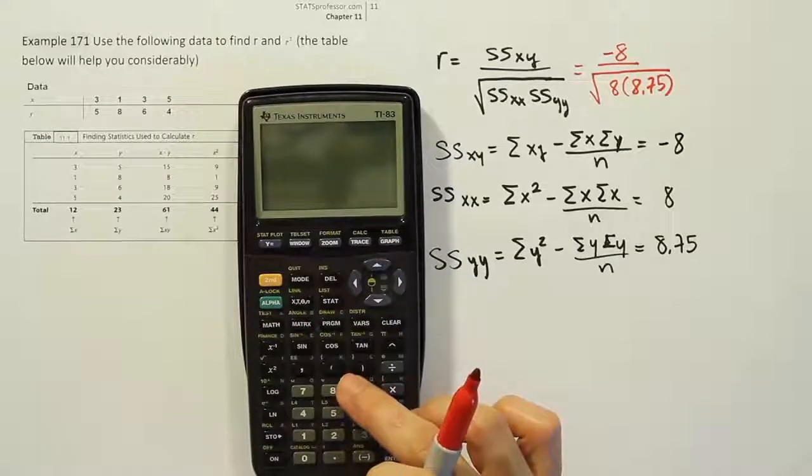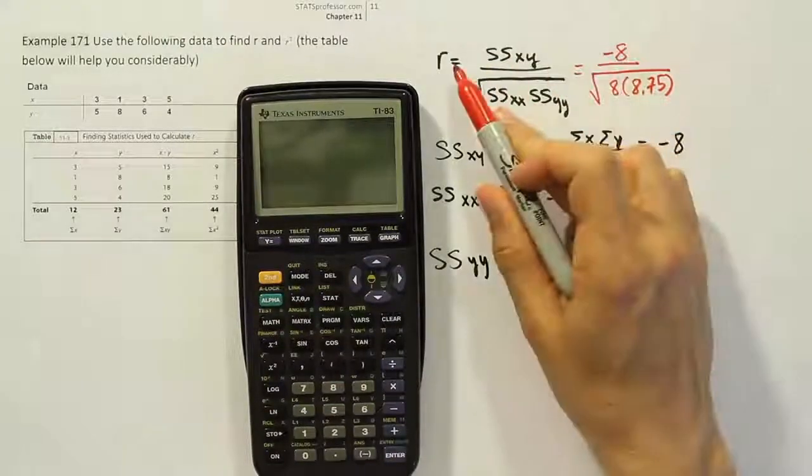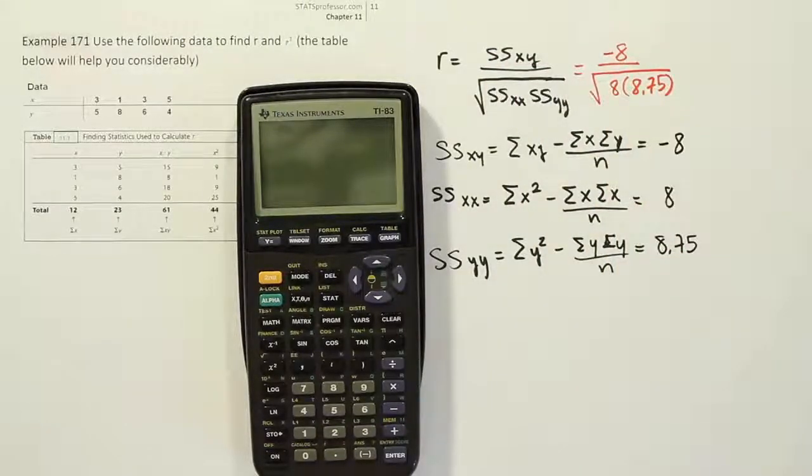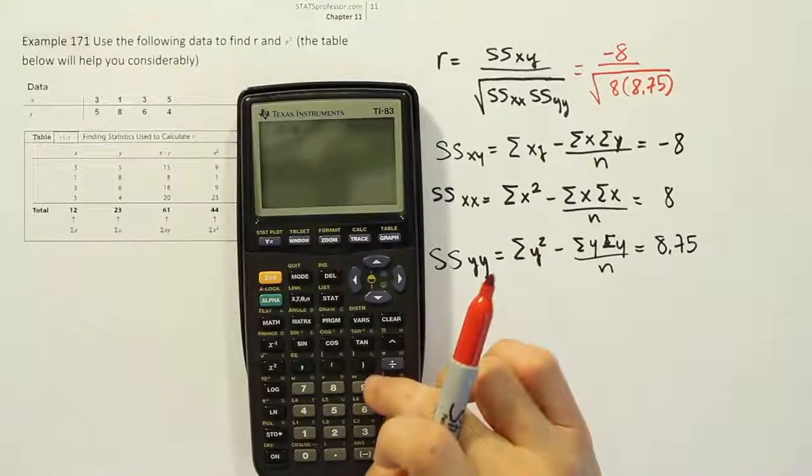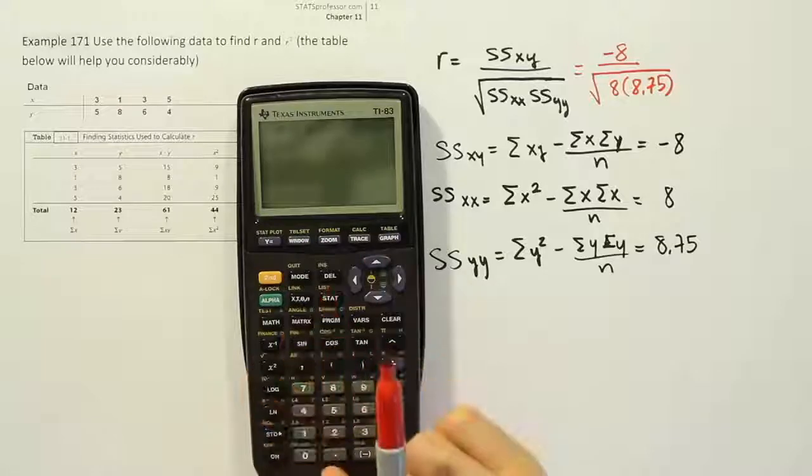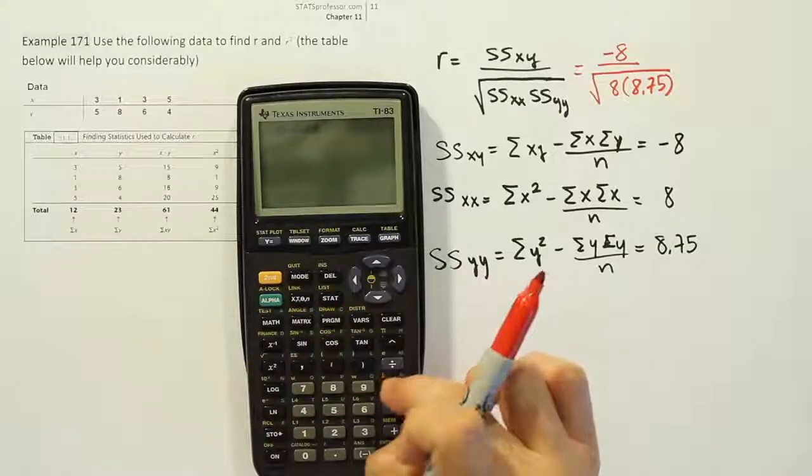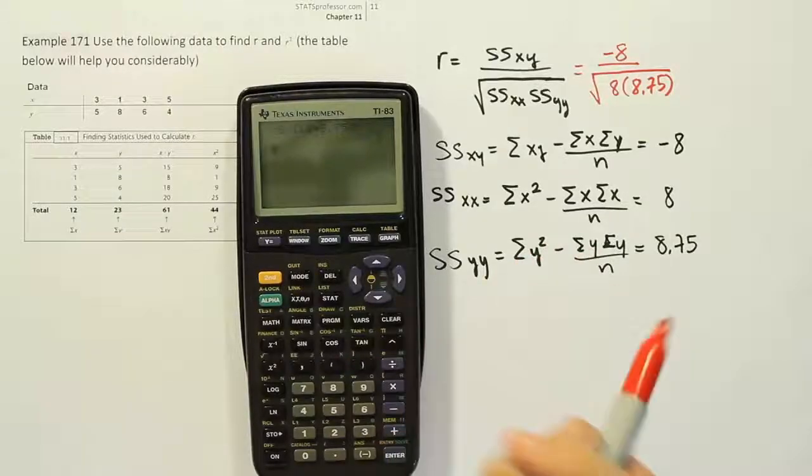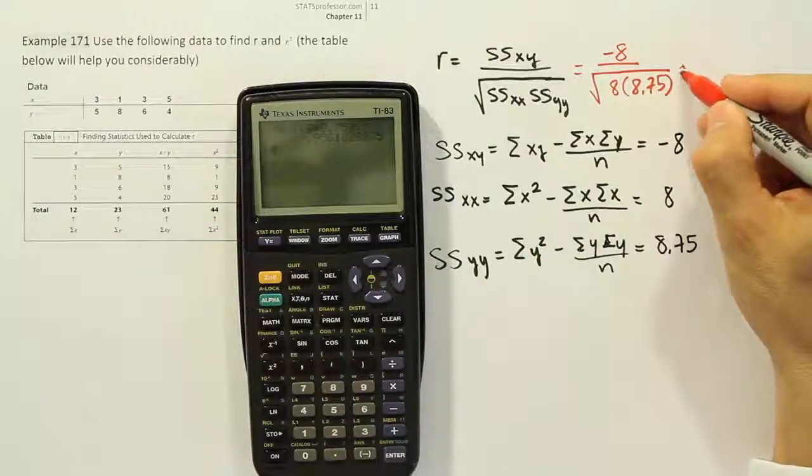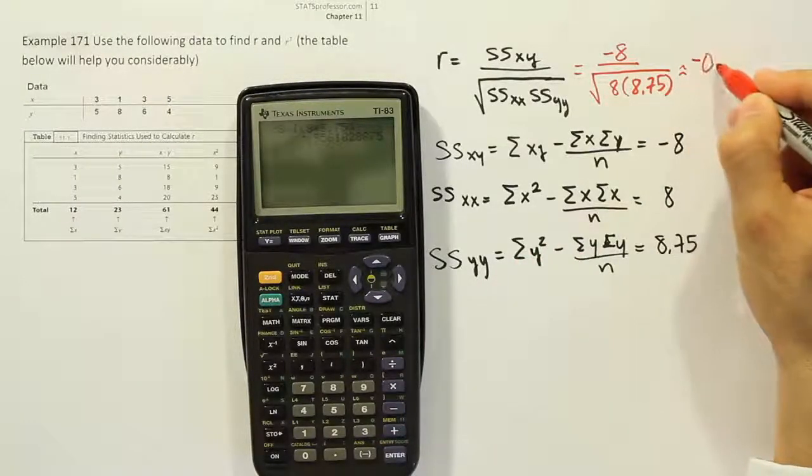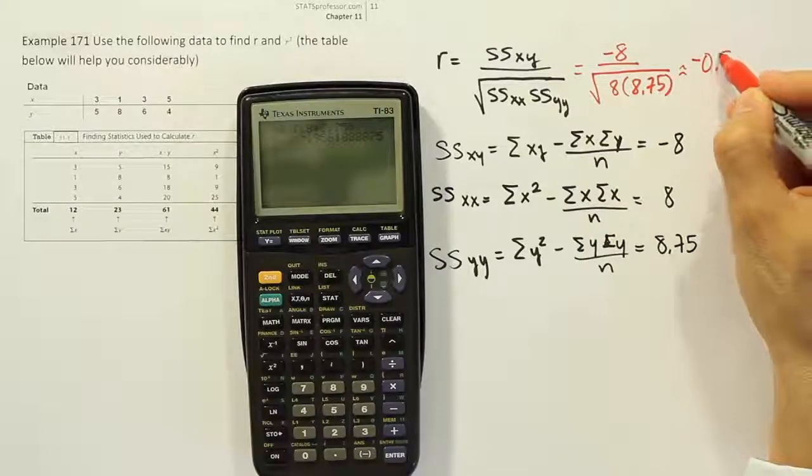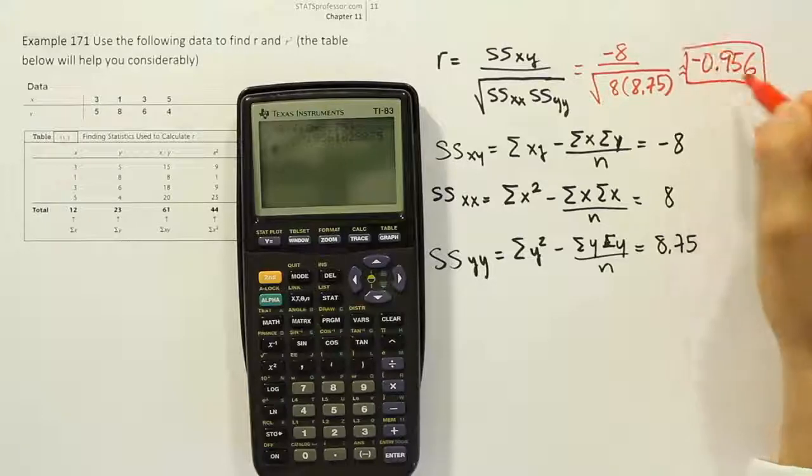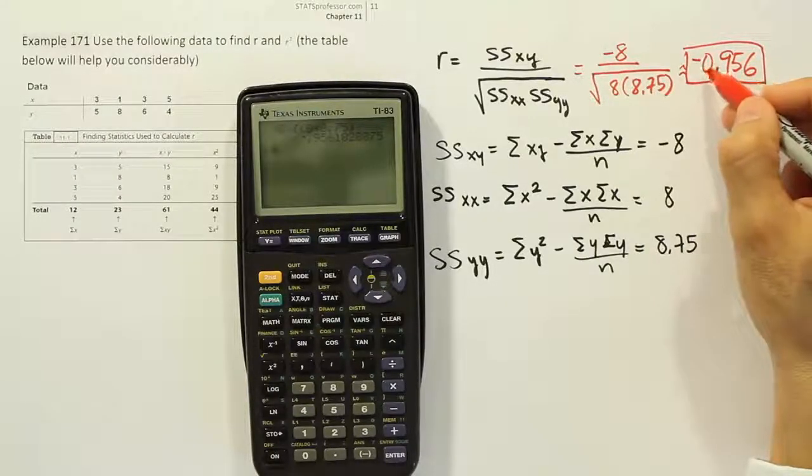Negative 8, right? So that means a negative, by the way, linear relationship. If there's a strong number here, we'll say it's a negative linear relationship. So negative 8 divided by the square root of—and the square root here will be 8 times 8.75. Close it up, hit enter, and we end up with a value that's negative 0.956.